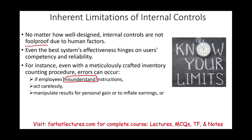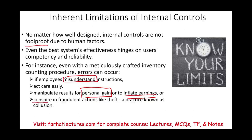Employees could also manipulate results for personal gain or to inflate earnings. Inflating earnings is basically part of personal gain because you're looking to make yourself or your department look good. That's also a limitation because management could override internal control — and that's a limitation. Additionally, people at the company could collude with each other, agree to commit fraud, and then the internal control is defeated. Internal control has inherent limits; you need to know what these limits are.